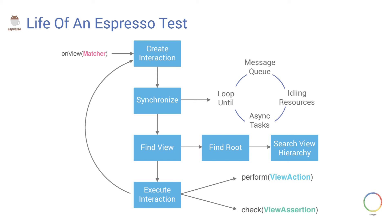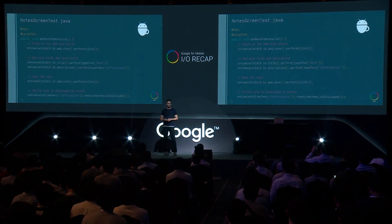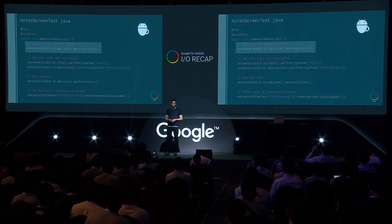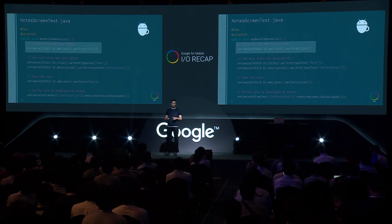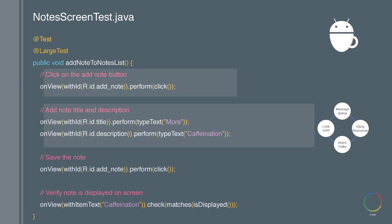Let's circle back to our original example to see how everything ties together in code. On the first line, we click on the add note button using a simple withId view matcher to locate the button and a click action. On the next line, Espresso synchronization kicks in and makes sure everything is idle before performing any actions — which eliminates any artificial thread sleeps or boilerplate synchronization code. Finally, we click the save button and verify that the note is displayed on screen.